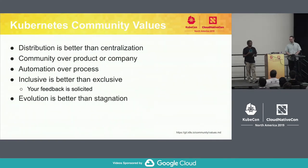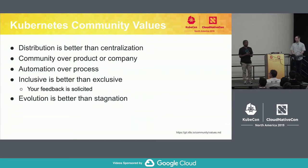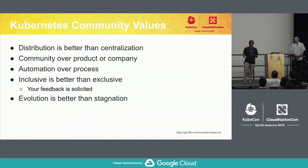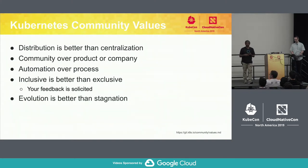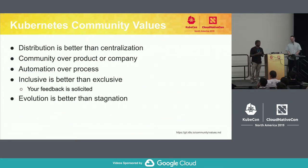Before we start, let's go over some of the community values that kind of drive us. We like to distribute the work — we don't want people to get overloaded. We value community over a specific product or a company. And we try to automate everything that we do, which is part of the reason why you have so many bots that come your way when you try to interact with us.